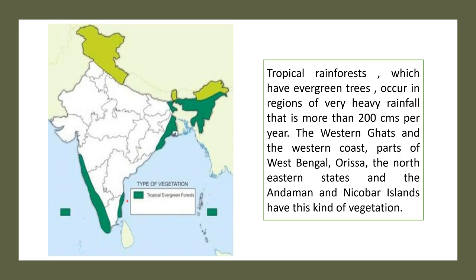Tropical rainforest has got evergreen trees. Evergreen trees means those trees which shed their leaves, but the entire forest will not shed their leaves at the same time. That is why they are known as evergreen trees. They are found in those areas where the rainfall is more than 200 cm, and they are concentrated mostly on the western part of the Western Ghats.